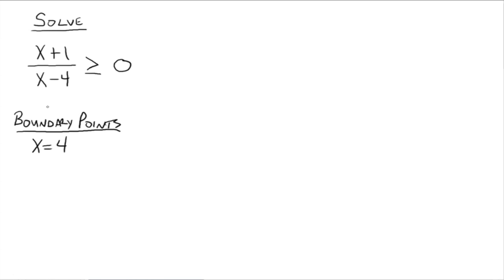We're also looking for whatever makes the rational expression equal to 0, which comes from whatever makes the numerator equal to 0. In this case, x equals negative 1 makes the numerator equal to 0. So it boils down to: find what makes the numerator equal to 0 and what makes the denominator equal to 0 — we call those the boundary points.